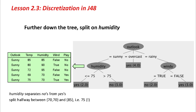In a more complicated example, we might split on the same attribute more than once. For a nominal attribute like Outlook, once we split on it we've used all the information in that attribute and won't split on it again further down the tree. But that's not true for numeric attributes — we could split with one threshold, and further down the tree split again on the same attribute with a different threshold.